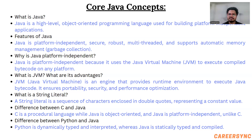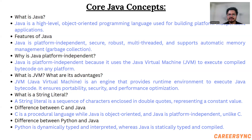Why is Java platform independent? Java is platform independent because it uses the JVM to execute compiled bytecode on any platform — that is the biggest advantage of the JVM. What is JVM and what are its advantages? JVM is an engine that provides a runtime environment to execute Java bytecode. It ensures portability, security, and performance optimization.